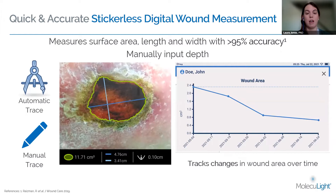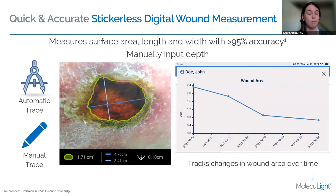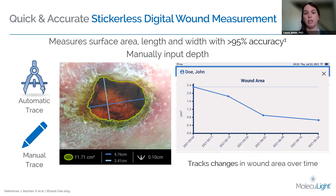Quickly about measurement — we use unique technology to perform stickerless digital wound measurement. We measure the surface area, and the length and width at greater than 95% accuracy. And because of our organizational system, we are able to track wound area over time. You can pull up a wound graph and see very quickly what your wound is doing — is it getting smaller, is it getting larger — and this can help inform your decision-making.